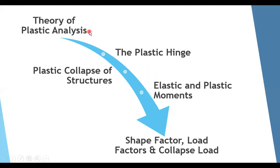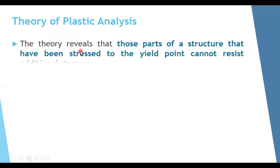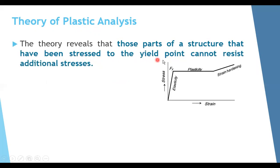Let's start with the theory of plastic analysis. The theory reveals that parts of a structure that have been stressed to the yield point cannot resist any additional stress. As we see in the stress-strain curve, once you reach the yield strength, stresses are not increasing anymore — you have only strains and deformations. So any part of the structure that reaches yield cannot resist any additional stresses and will not be able to take any additional load.